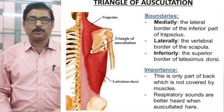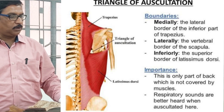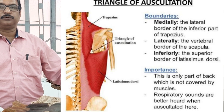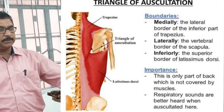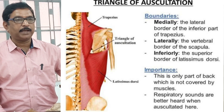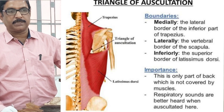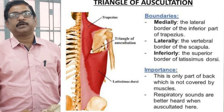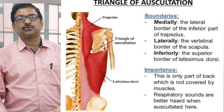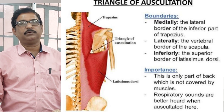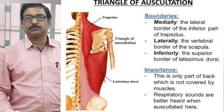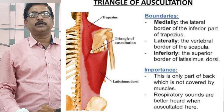So in a viva question, if you are asked what is the triangle of auscultation, you will answer that it is a triangle on the back side of the thoracic wall bounded above by the lateral border of trapezius, below by the upper border of latissimus dorsi, and laterally by the medial border of the scapula. This triangle is not overlapped by any important muscles, so only ribs and intercostal spaces are present. Deep to it you will get the lung, and breath sounds are nicely audible with a stethoscope. On the left side particularly, you will also get a flushing sound from fluid passing through the esophagus.